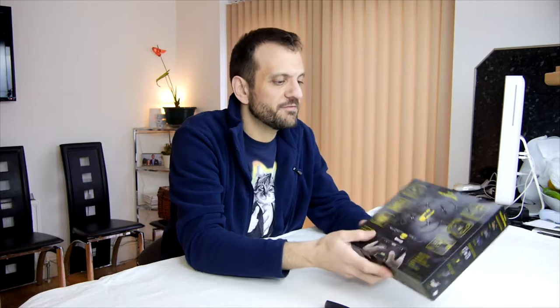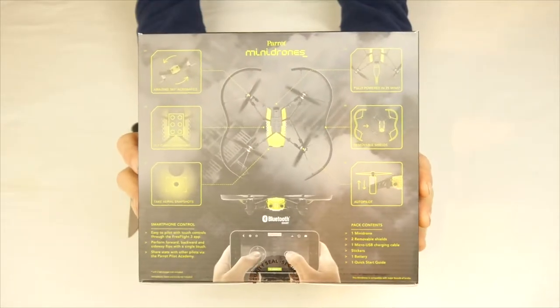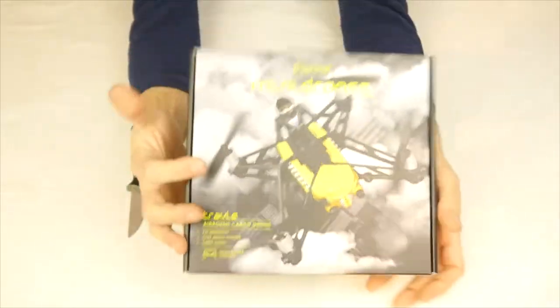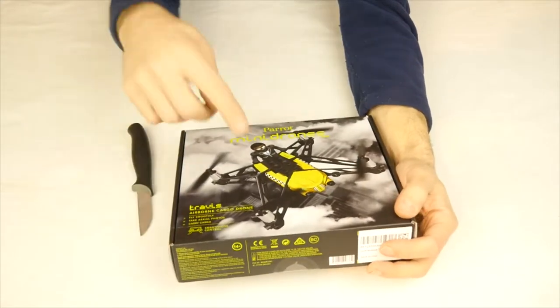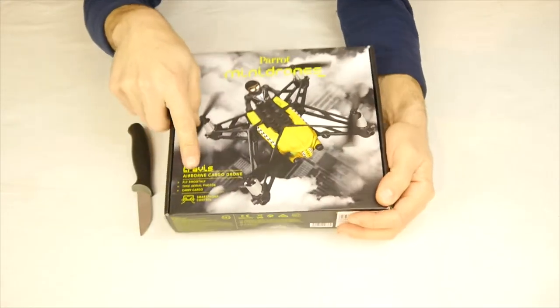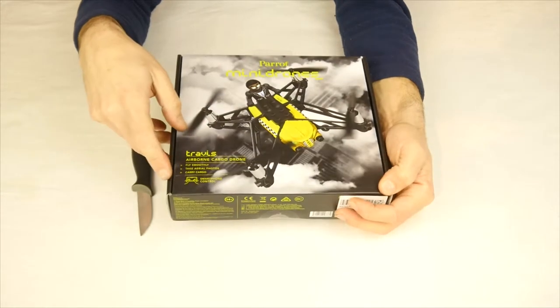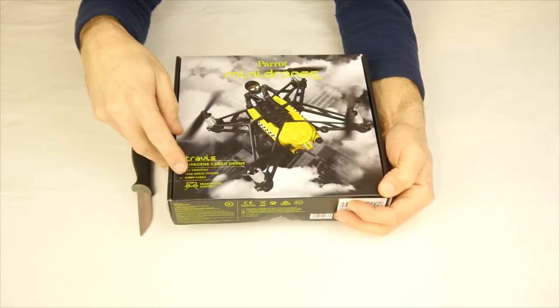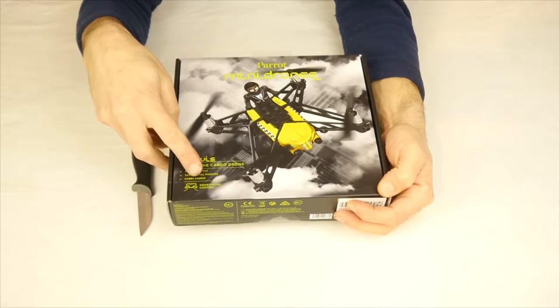I know that's a little bit unusual for the things I tend to review, but for the first time ever a brand new drone. So it looks like it might have a camera in it too. This is the Parrot mini drone Travis. The airborne cargo drone: fly smoothly, take aerial photos, carry cargo, smartphone control, Bluetooth, Google Play, Apple Store.